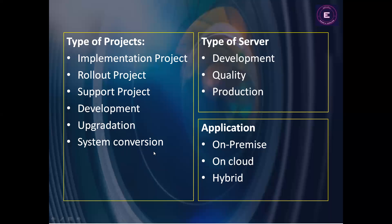System conversion is when the customer wants to upgrade their ERP system — for example, from SAP ECC R3 with EHP 6, 7, or 8 — to S/4HANA. These are the different types of projects in the industry. For all projects, the heart is the implementation project where every activity is performed.